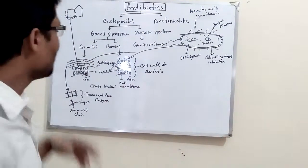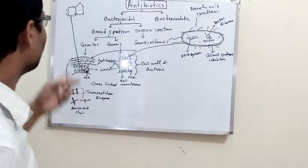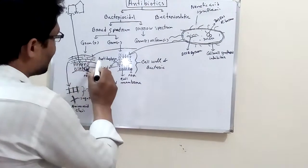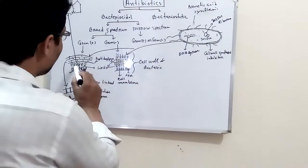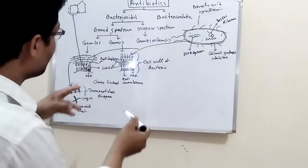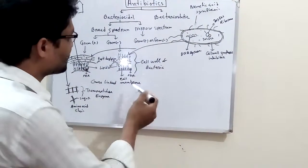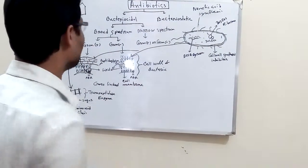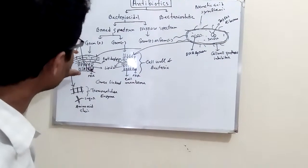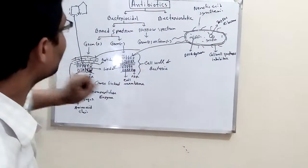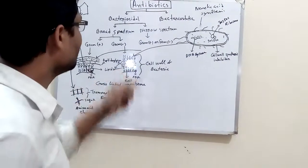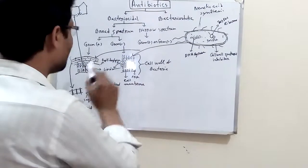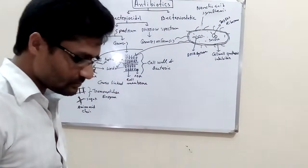Gram-positive and gram-negative bacteria differ in their cell wall structure. Gram-positive bacteria have a thick peptidoglycan layer. Gram-negative bacteria have an outer lipid layer, followed by a thin peptidoglycan layer, and then the cell membrane beneath. The peptidoglycan layer in gram-negative bacteria is thinner compared to gram-positive bacteria.